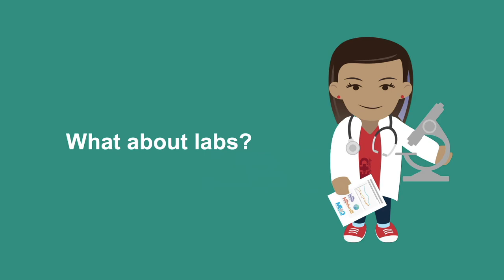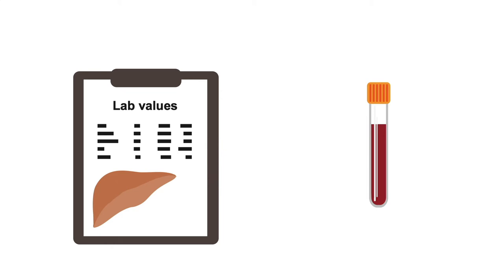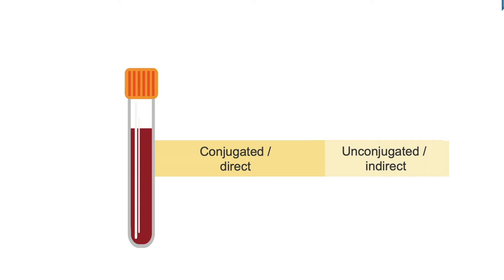So what might you expect to see in the lab results of a patient with cholecystitis? Patients with cholecystitis typically have a leukocytosis and a left shift on their complete blood count. The liver function tests are important in these patients. A liver function test will report not only the total bilirubin, but will specify the portion that is conjugated or direct versus unconjugated or indirect.